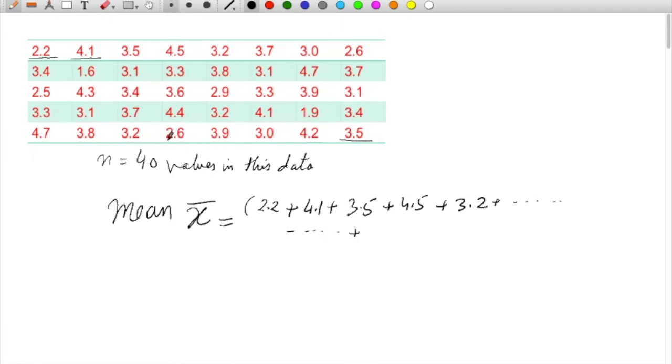Moving through the data, the values are 2.6 plus 3.9 plus 3.9 plus 3.0 plus 4.2 plus 3.5 divided by 40.